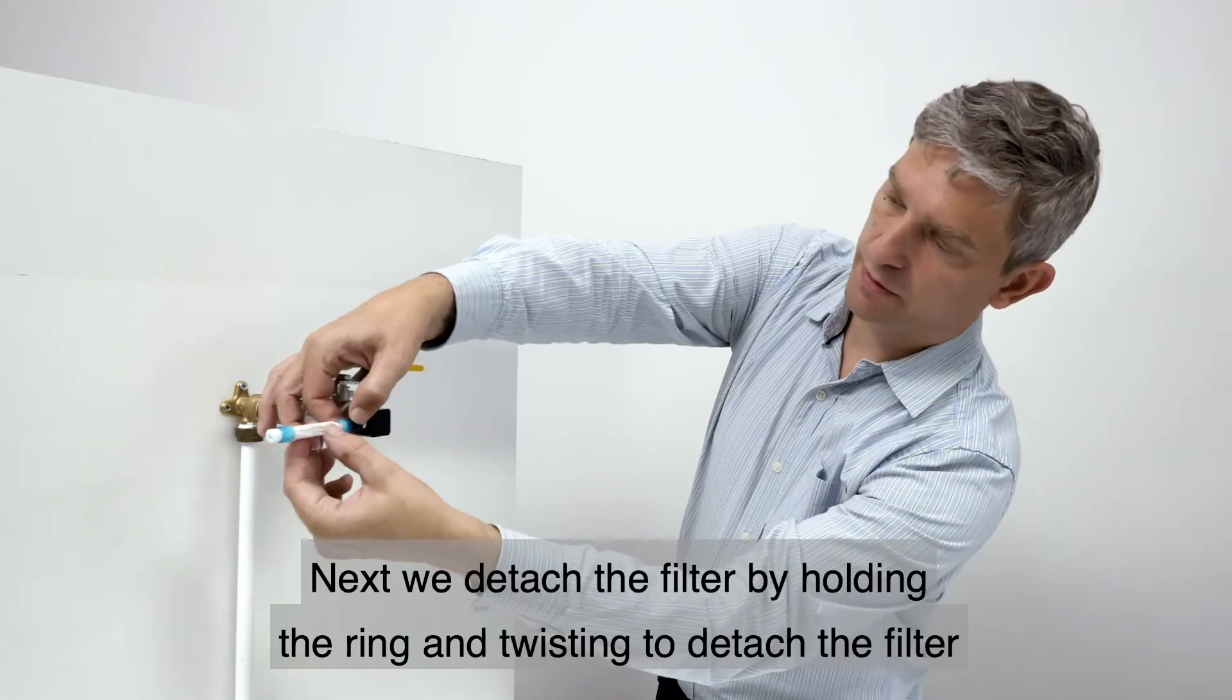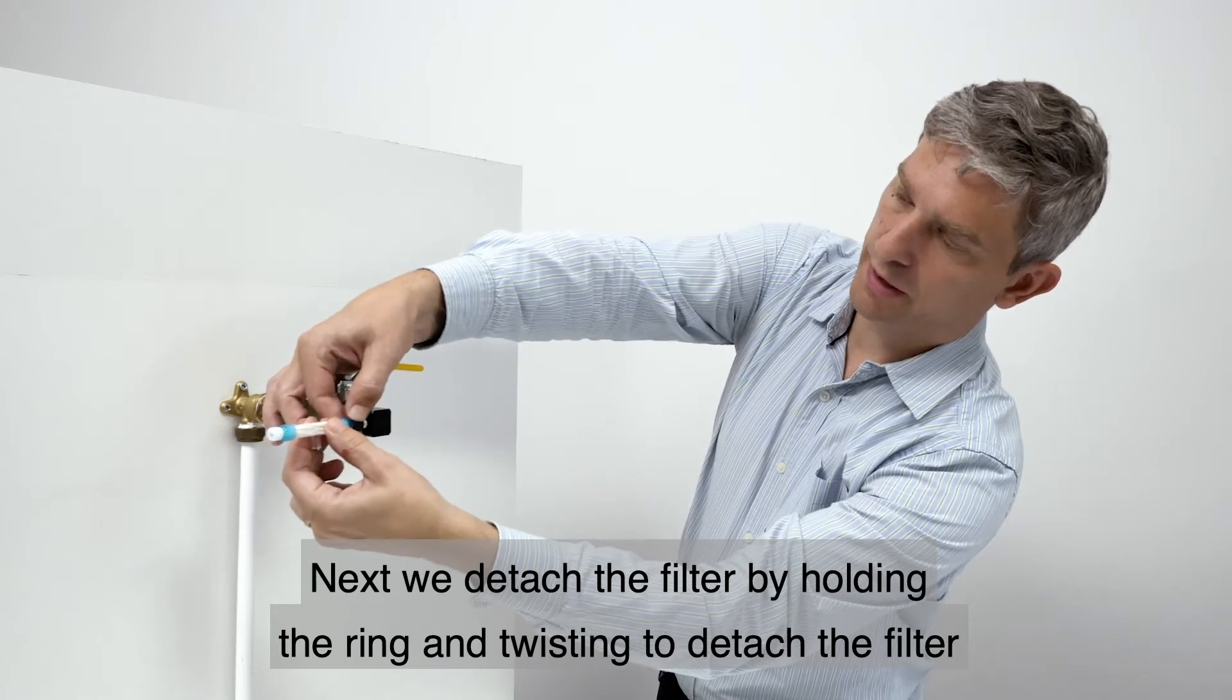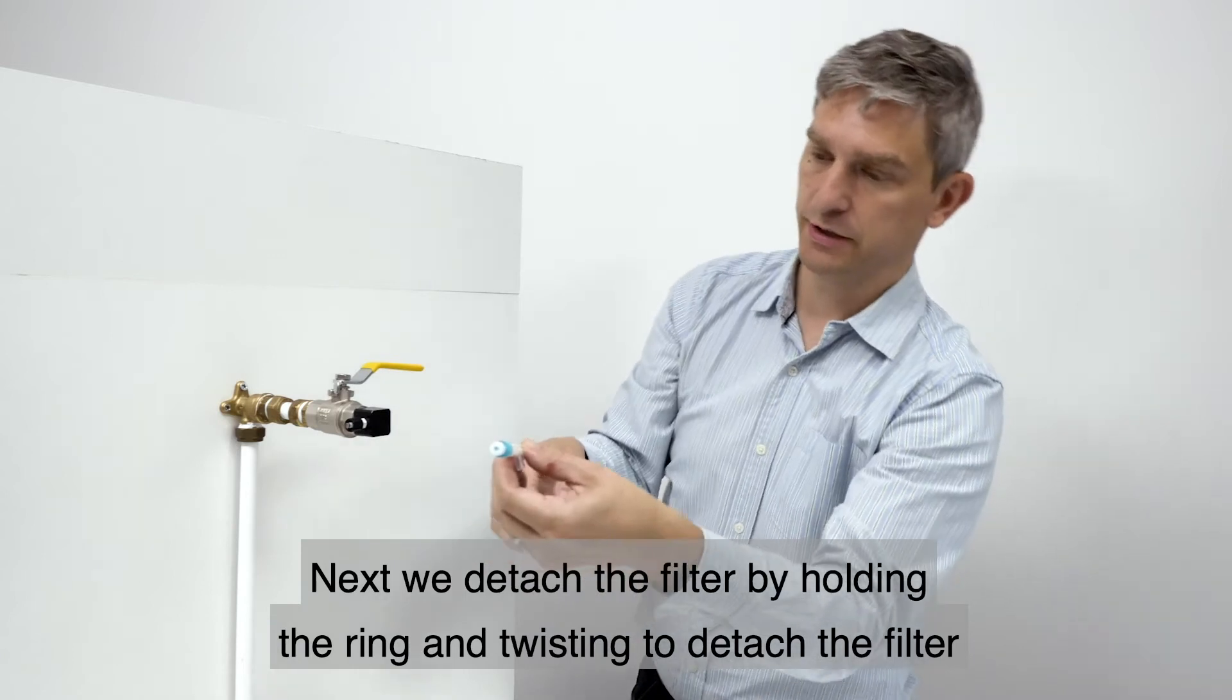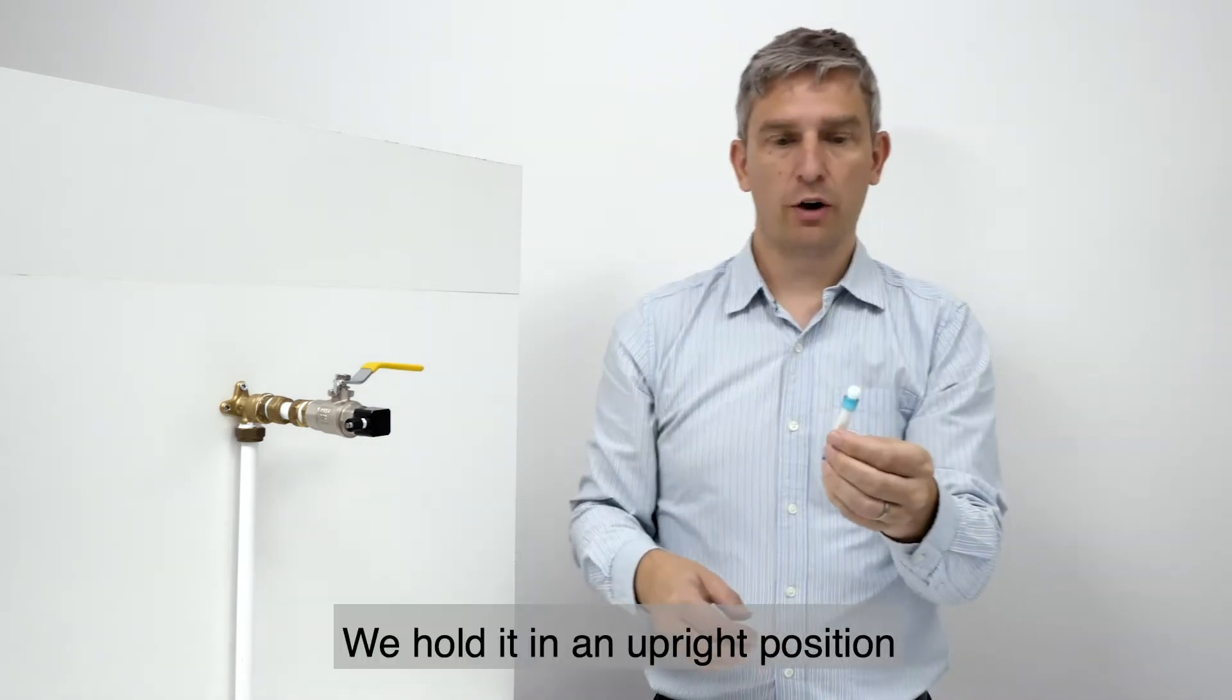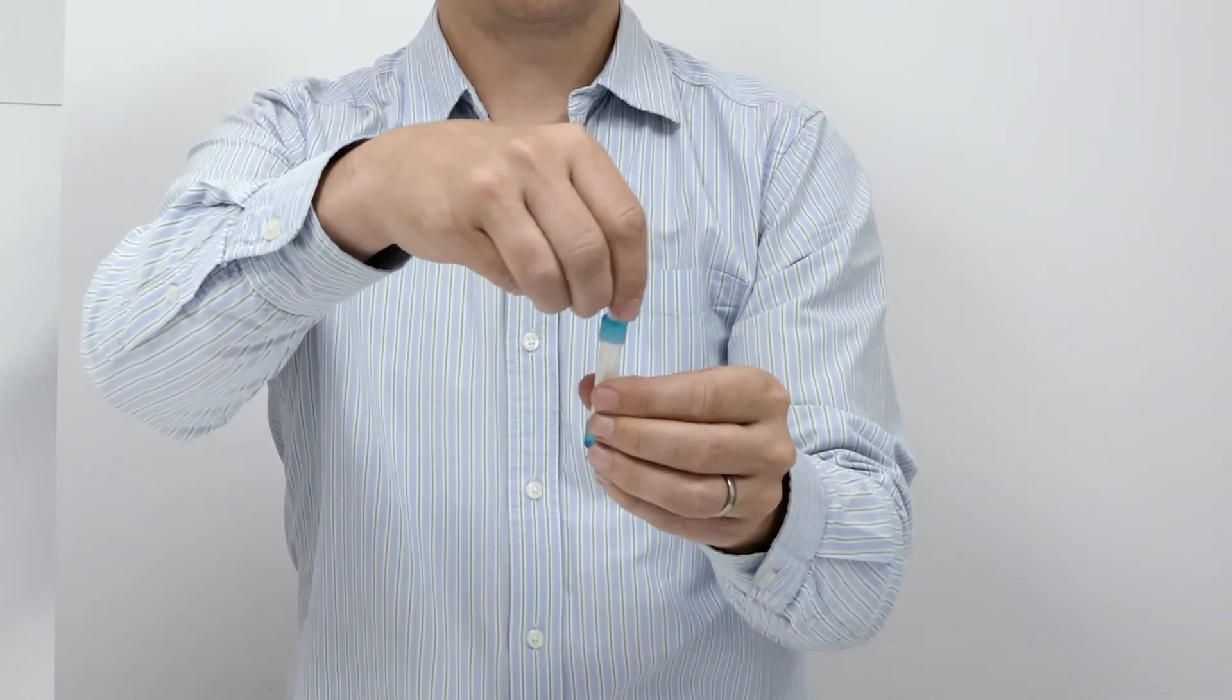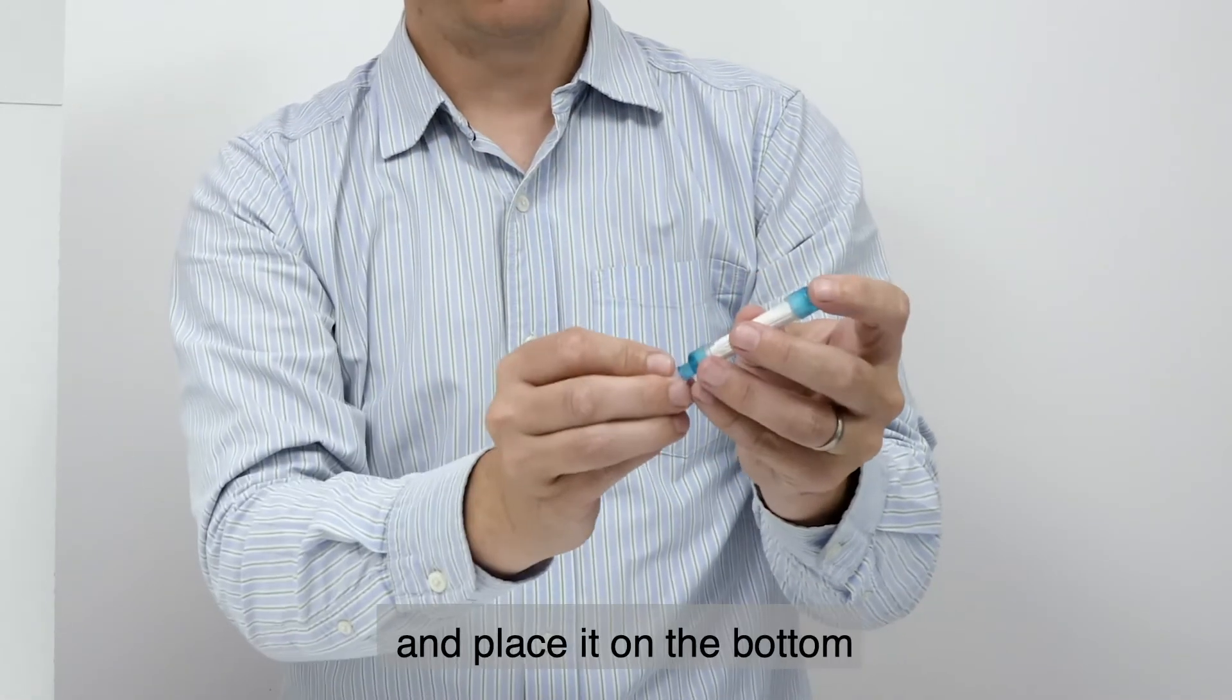Next we detach the filter by holding the ring and twisting to detach the filter. We hold it in an upright position. We then remove the cap from the top and place it on the bottom.